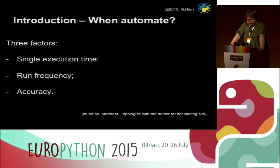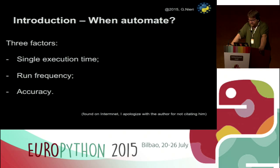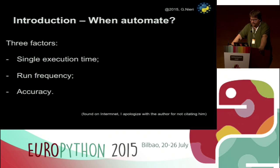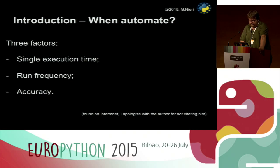The second question is: when to automate? There are three factors to consider. The first is execution time — when a task takes time to execute, it's always a good candidate for automation. If you automate a long task, every time you run it you save an incredible amount of time. The second factor is frequency — tasks that don't take so much time can still be automated if they run frequently during the day. Consider the short amount of time multiplied by the number of times you run the task, and you always get a good time saving.